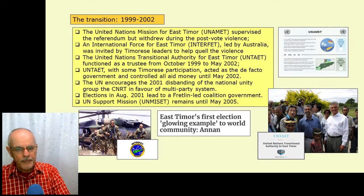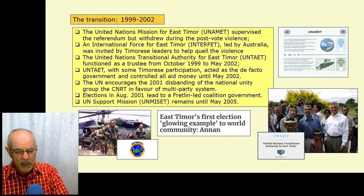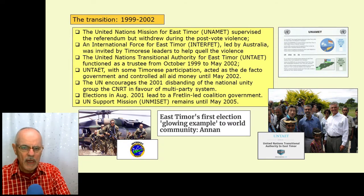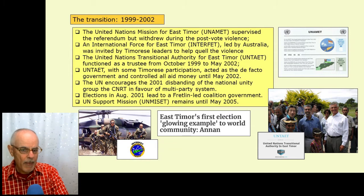In the transition period, first there was the United Nations mission for East Timor which supervised the referendum but withdrew during the post-vote violence after August 1999. Then an international force for East Timor led by Australia came in quickly because there was no time to organize a new UN body. East Timorese leaders did invite this Interfet force to try and quell the violence. A few months later in October 1999, the UN created a UN transitional authority for East Timor, which functioned as a trustee from October 1999 until the independence ceremony in May 2002.